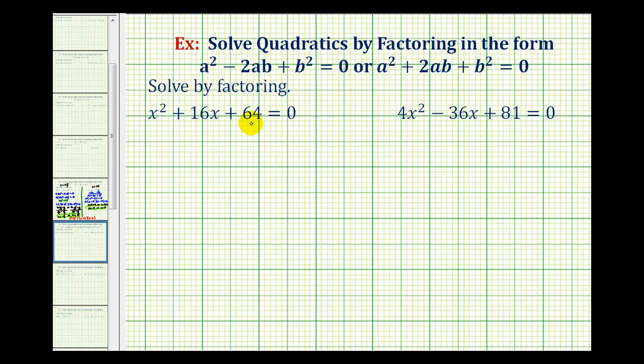So if this does factor, it would factor into two binomial factors where the first terms in the binomial factors would come from the factors of x², which would be x and x, and the second terms in the binomial factors would come from the factors of positive 64 that add to 16.